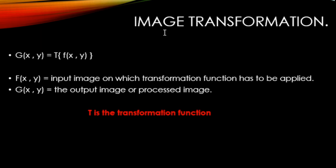Now we discuss image transformation. Transformations are operations that map one set to another set. Image transformation refers to a process in which we manipulate various bands of image data. The data is manipulated from one or more multi-spectral images, which may also consist of the same area captured at different times.